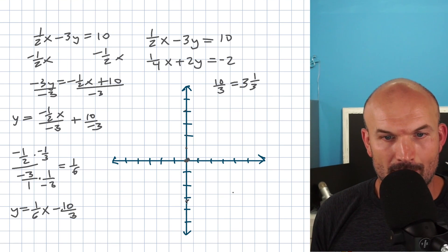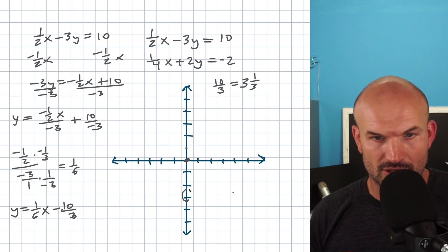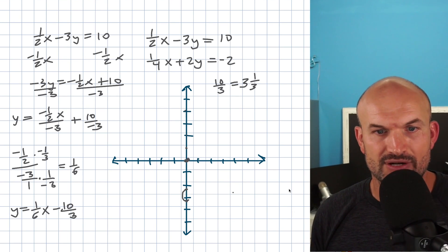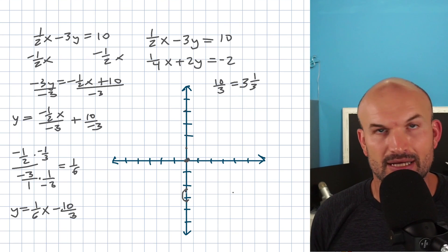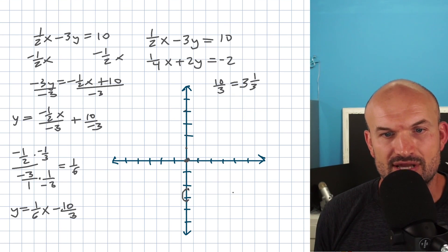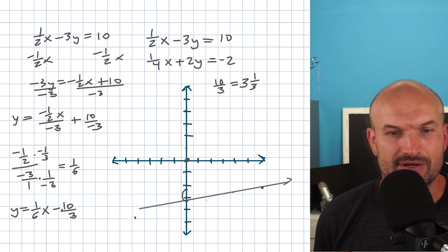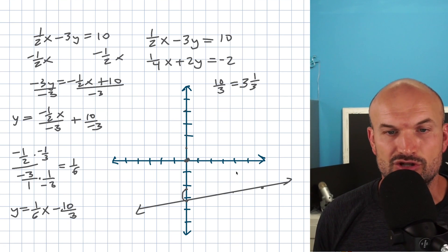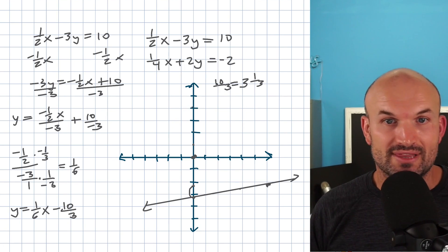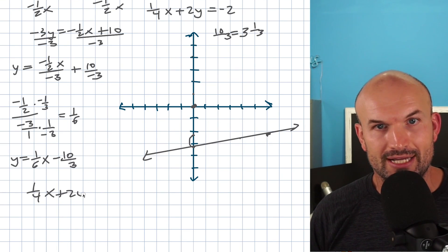Using the slope of 1/6, I can go up 1 and then over 6 units. Going up takes me to about 2 and 1/3, and then over 6 tick marks. Now I'll go ahead and connect those two points. Now let's graph the equation 1/4 x plus 2y equals negative 2. I need to rewrite that into slope-intercept form.